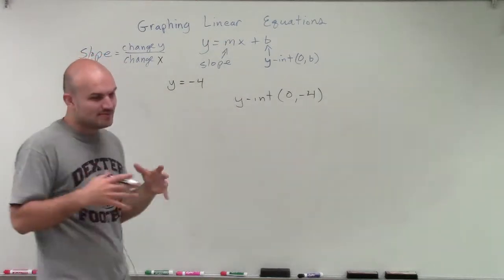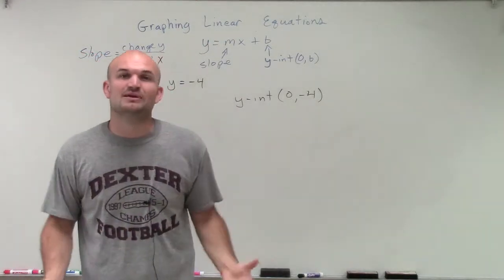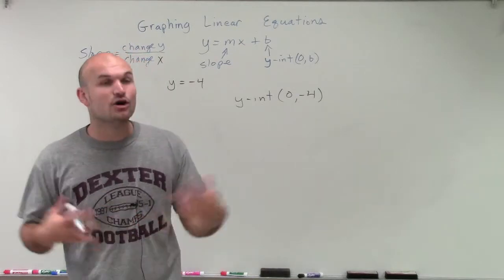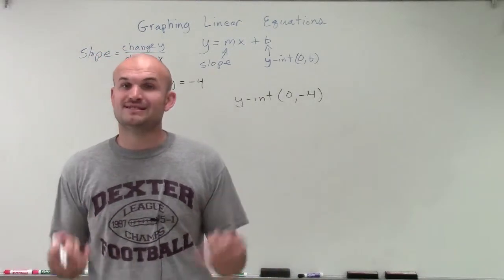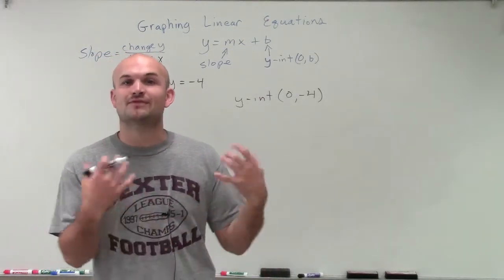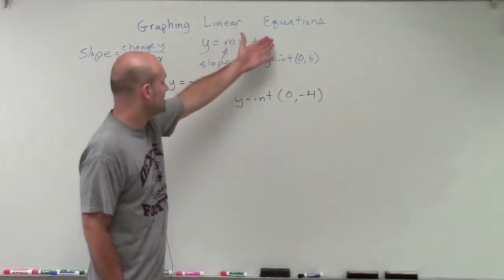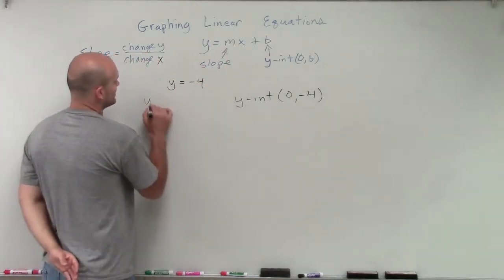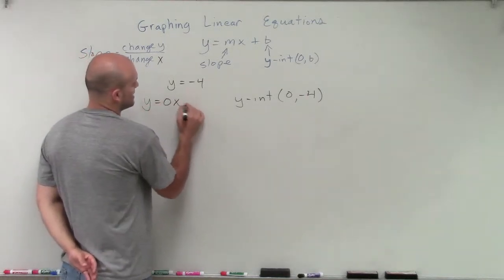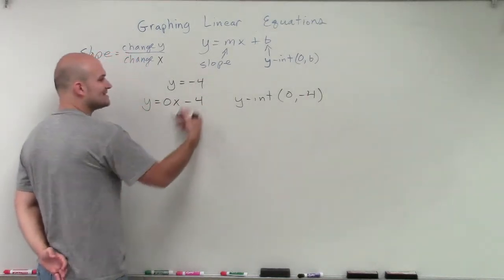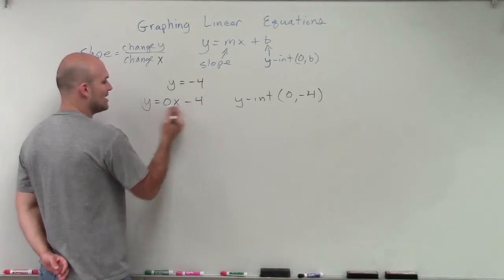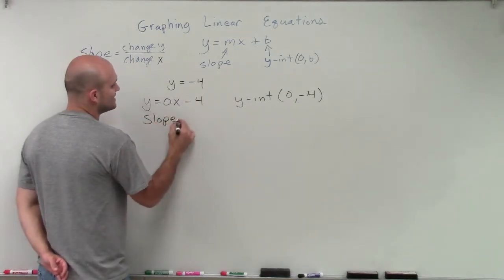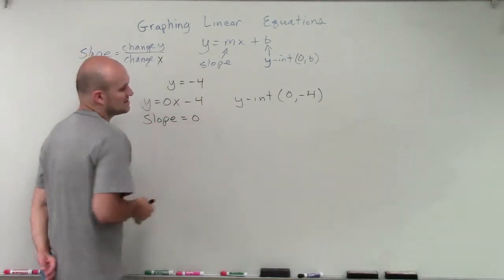So what could my slope possibly be that would eliminate my x? And the only answer that we have would be 0, because 0 times x is going to be 0. And 0 plus your y-intercept is going to leave me with a negative 4. So I can rewrite this as y equals 0 times x minus 4. That's going to be the exact same equation, but I write it like this so I can understand and see that my slope is going to equal 0.